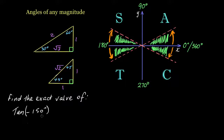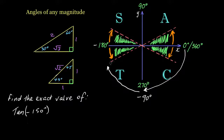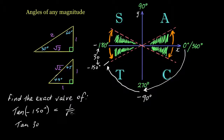Find the exact value of tan negative 150. Working backwards from 0, negative 90 is at the bottom and negative 180 is the horizontal line on the left. Negative 150 sits between those. How far from the horizontal line is negative 150? That's 30 degrees, since negative 180 minus negative 150 is 30. So we use tan 30, which is opposite over adjacent giving 1 over root 3. We're in the third quadrant where tan is positive, so tan(−150) equals 1 over the square root of 3.